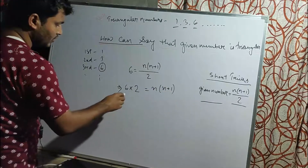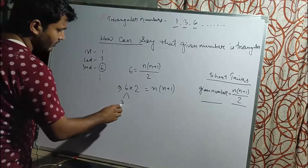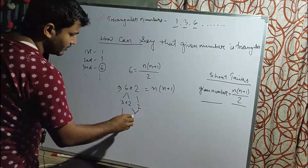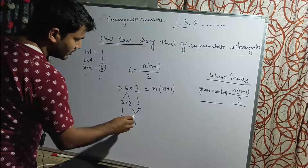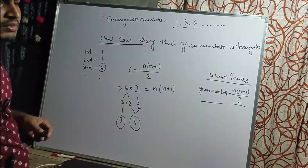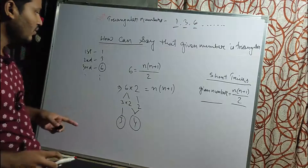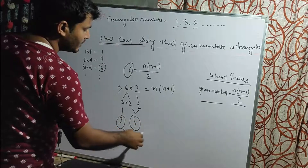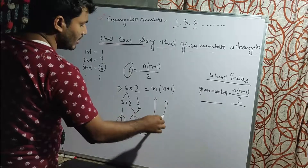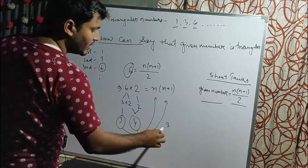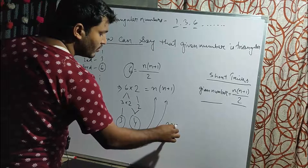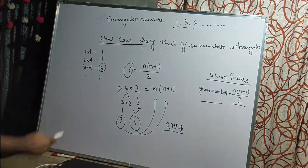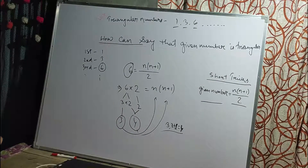So 2 times 6 equals 12, and we factorize this as 3 times 4, which are consecutive numbers. Therefore we can say that 6 is a triangular number, because if n equals 3, then n+1 equals 4.